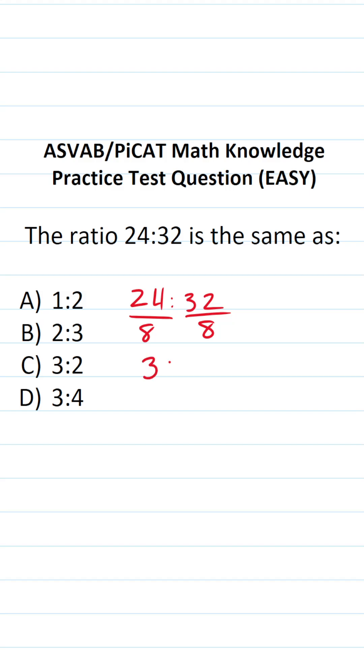24 divided by 8 is 3. 32 divided by 8 is 4. We can't reduce this any further. So the ratio 24 to 32 is the same as 3 to 4. So the correct answer to this one is D.